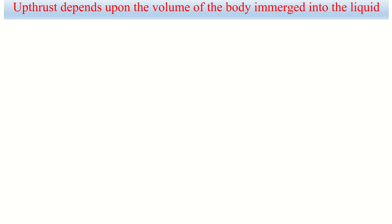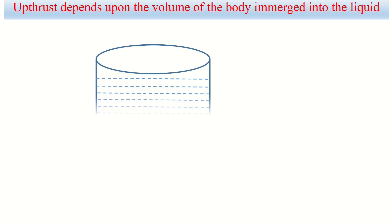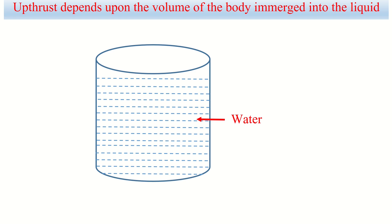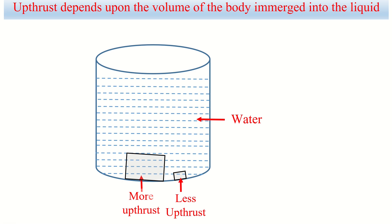Now the third point: upthrust depends upon the volume of the body immersed into the liquid. Say we have water with two sinking bodies — the first is bigger than the second. The volume of the first body immersed into the liquid is more, so the first one experiences more upthrust. The volume of the second body immersed is less, so it experiences less upthrust.